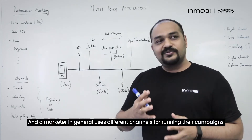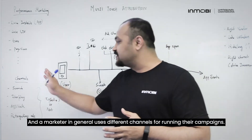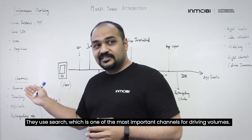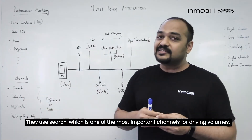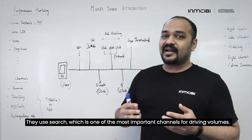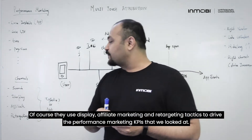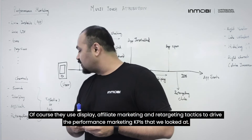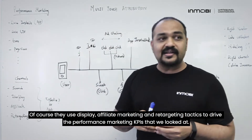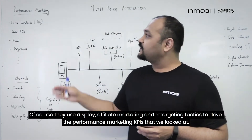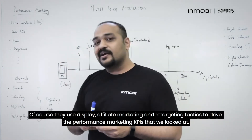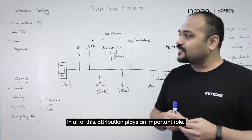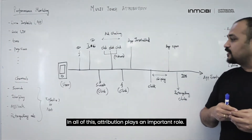A marketer in general uses different channels for running their campaigns. They use search, which is one of the most important channels for driving volumes. Of course they use display, affiliate marketing, and retargeting tactics to drive the performance marketing KPIs we looked at. In all of this, attribution plays an important role.